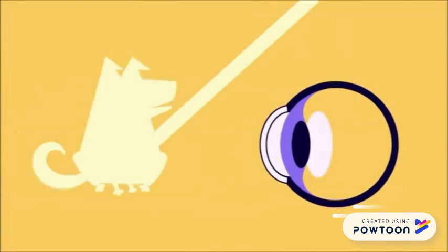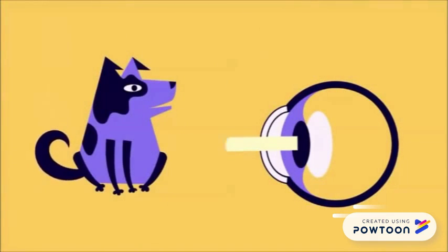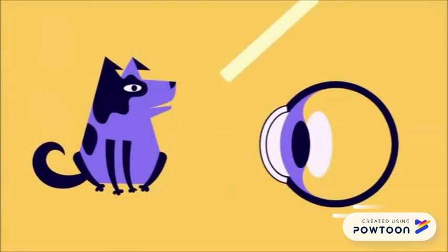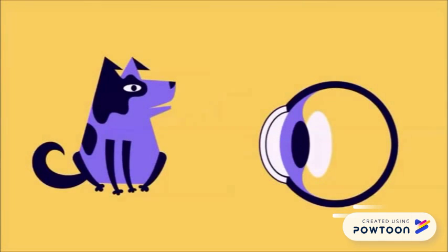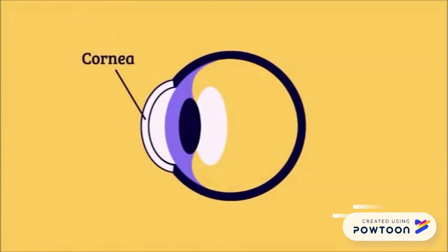Light bounces off an object you're looking at. Let's say the object is a dog. The light reflects off the dog to your eyes. The light enters the part of your eye called the cornea. The cornea is clear like a window. It helps your eye focus the light to make things look sharp and clear.